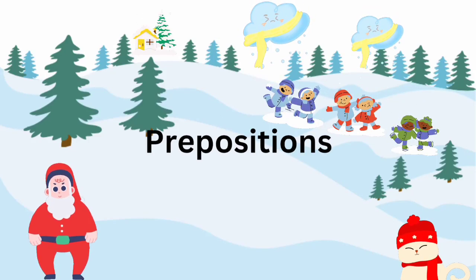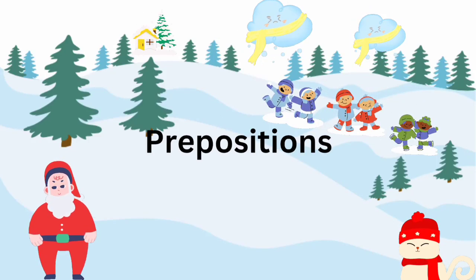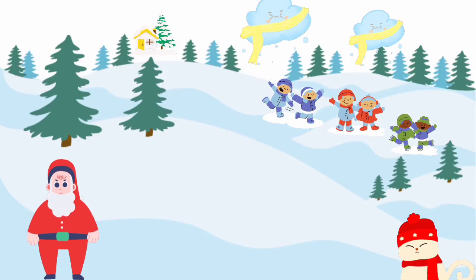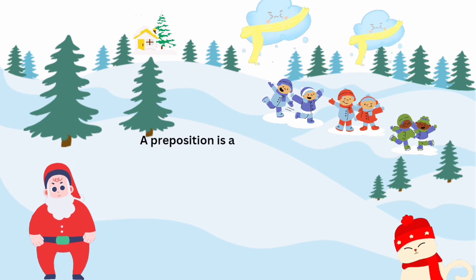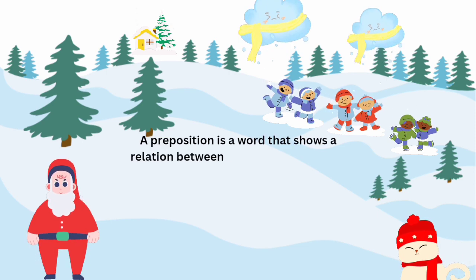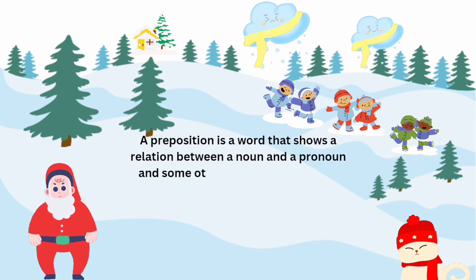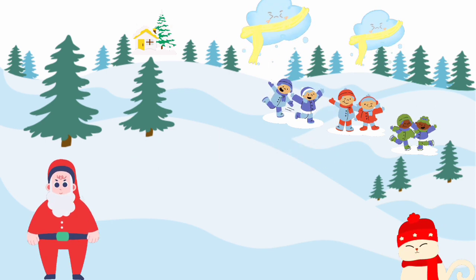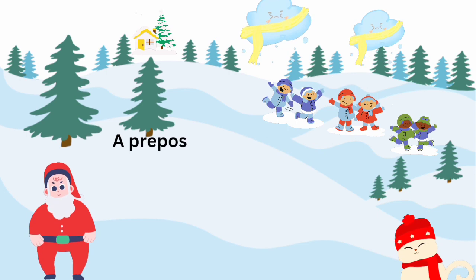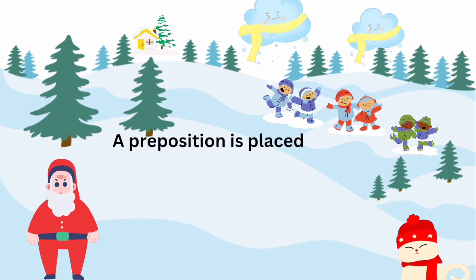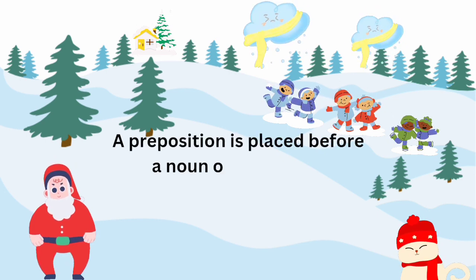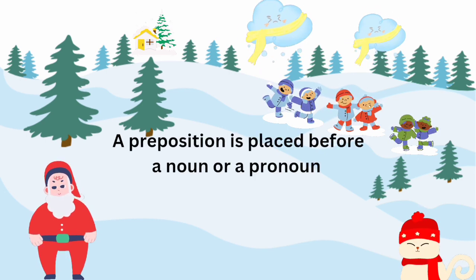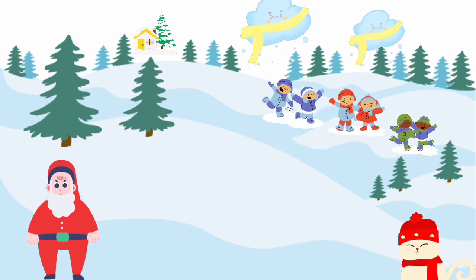Prepositions. A preposition is a word that shows a relation between a noun or a pronoun and some other words in a sentence. A preposition is placed before a noun and a pronoun.